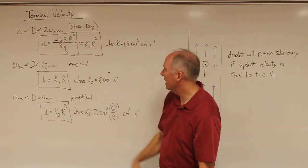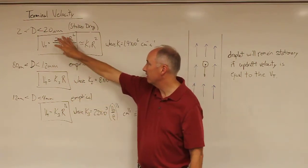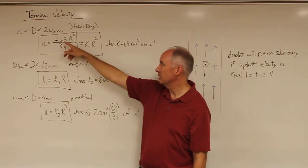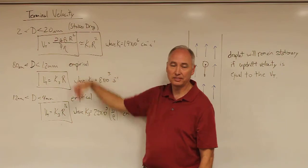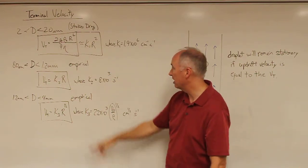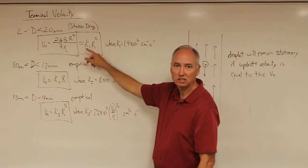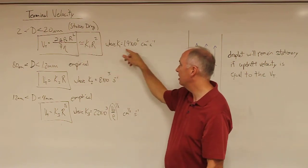We're going to simplify this and say for most conditions, gravity, the density of liquid water, and the dynamic viscosity of the air are not going to change that much. So we're just going to say it's approximately equal to a constant times R squared.